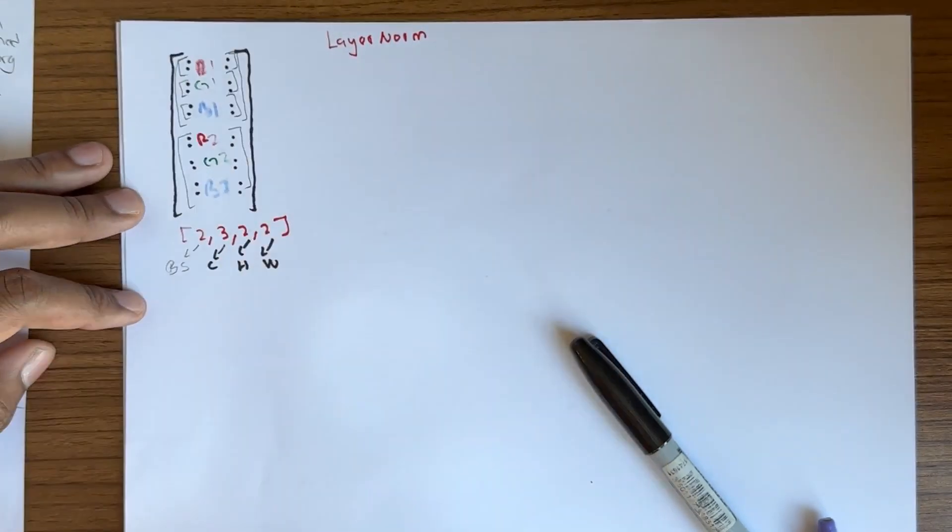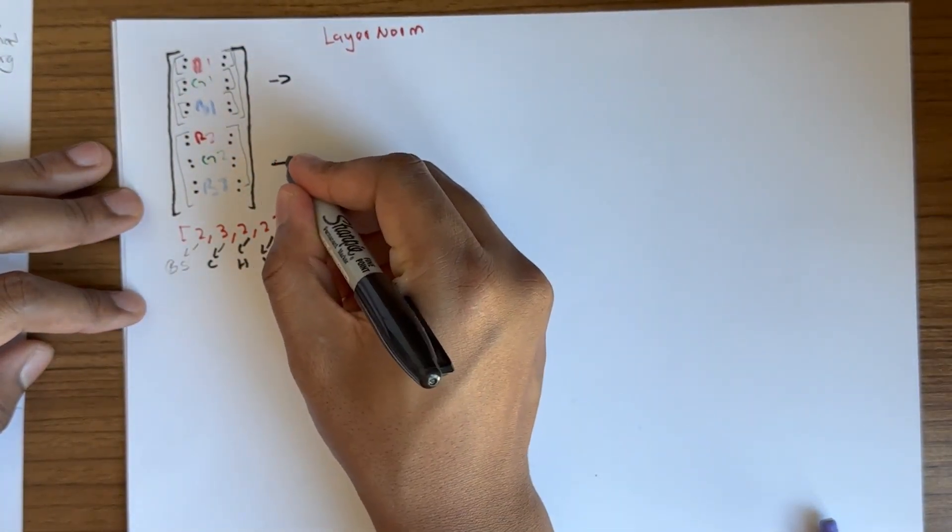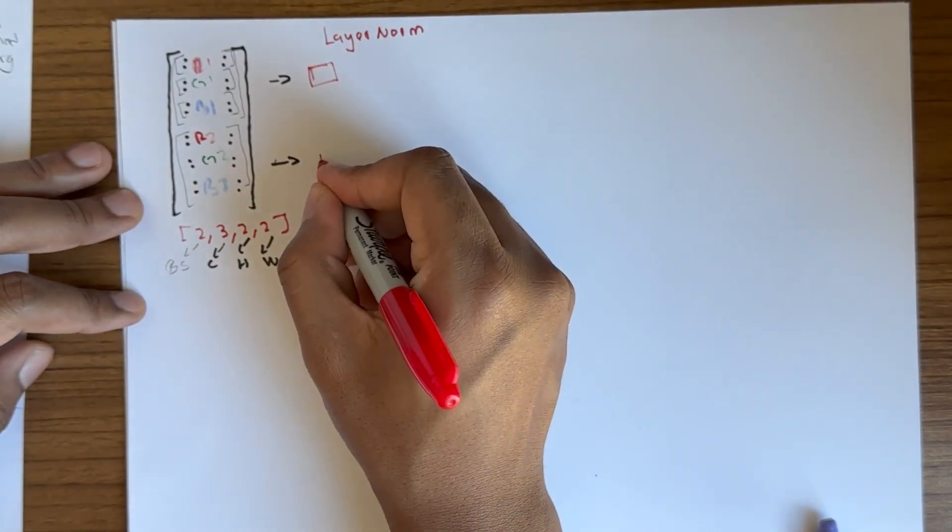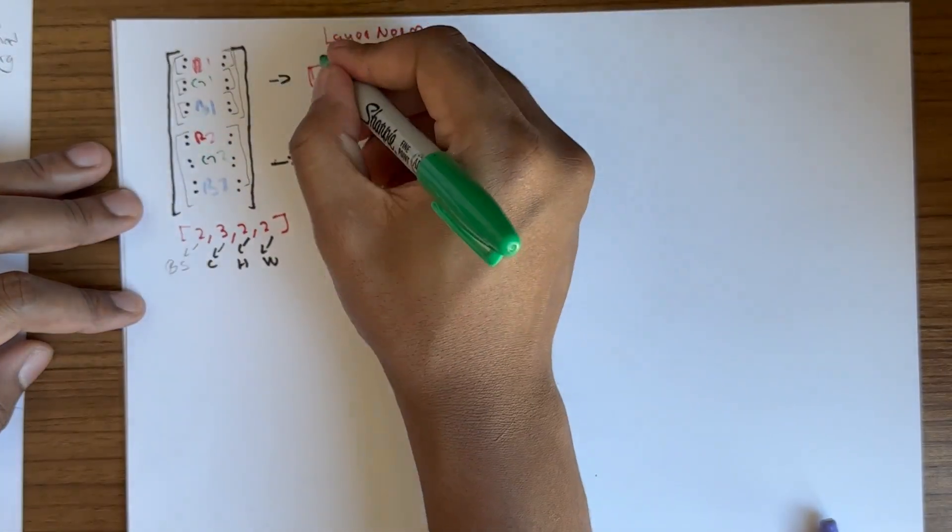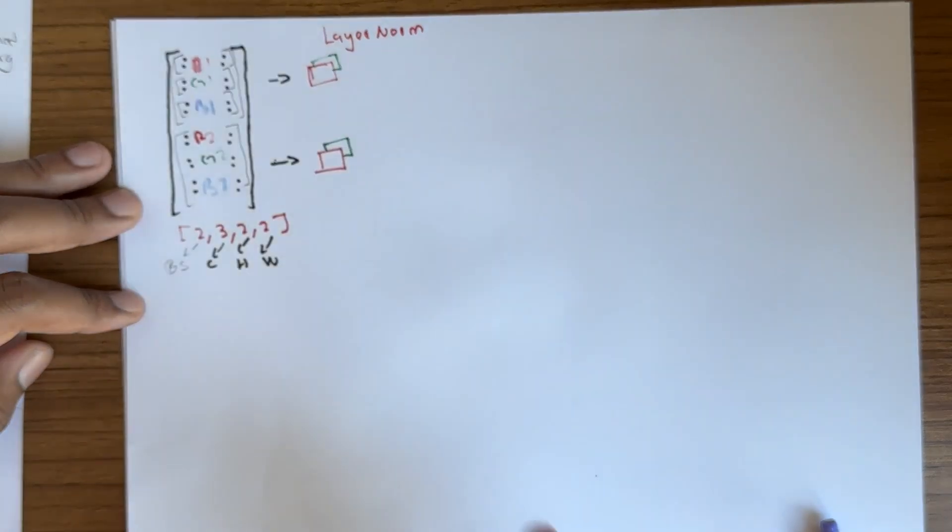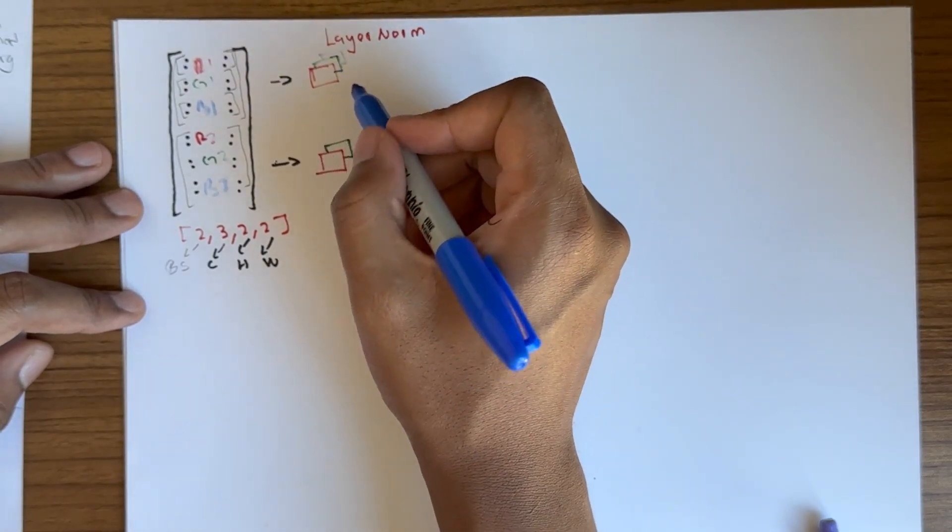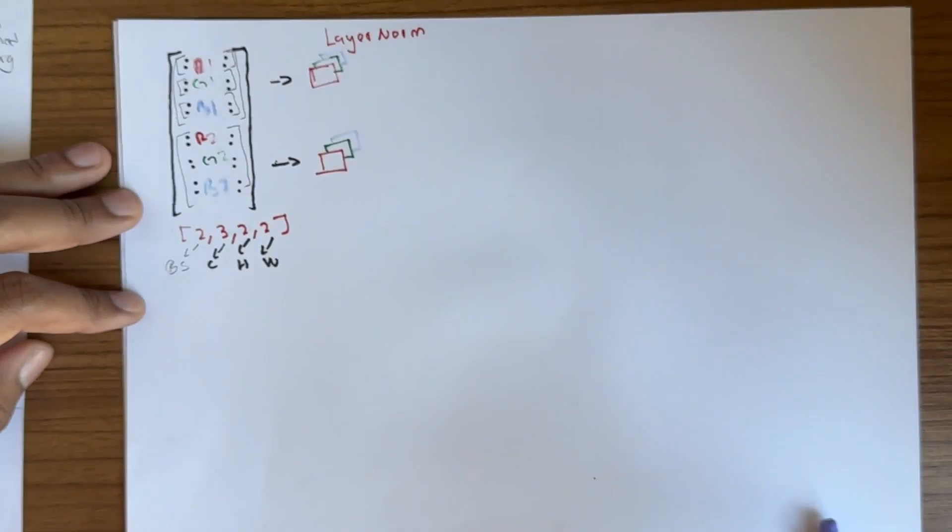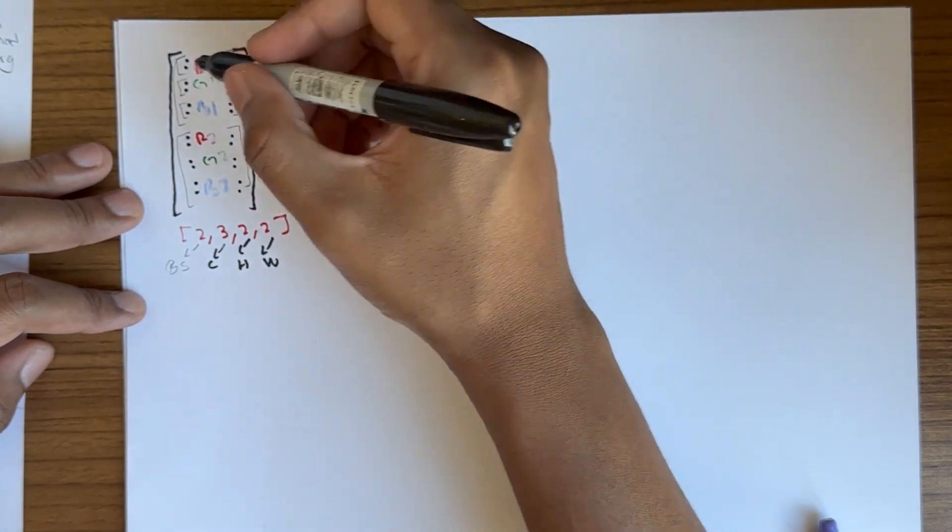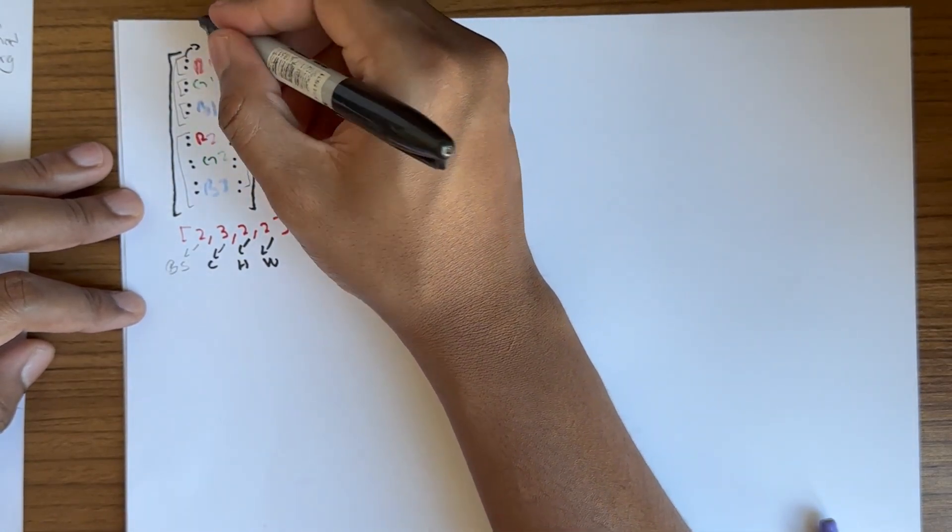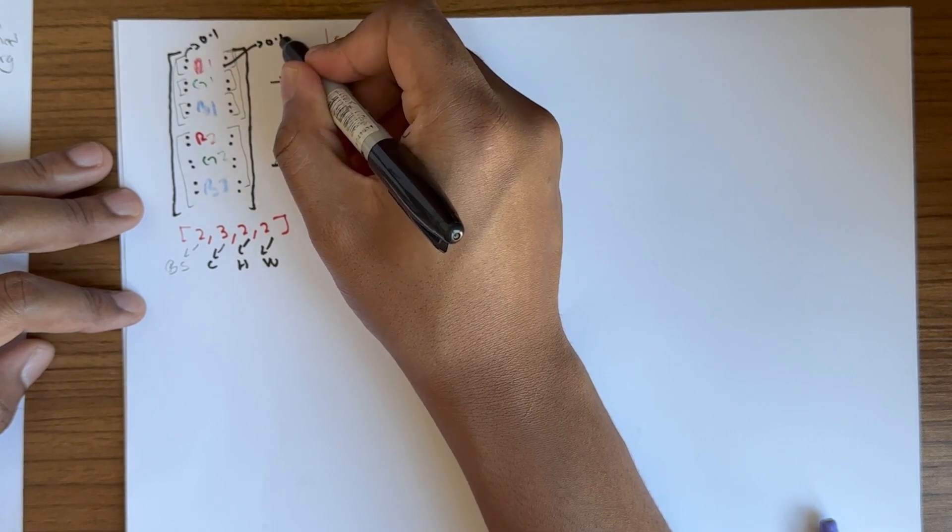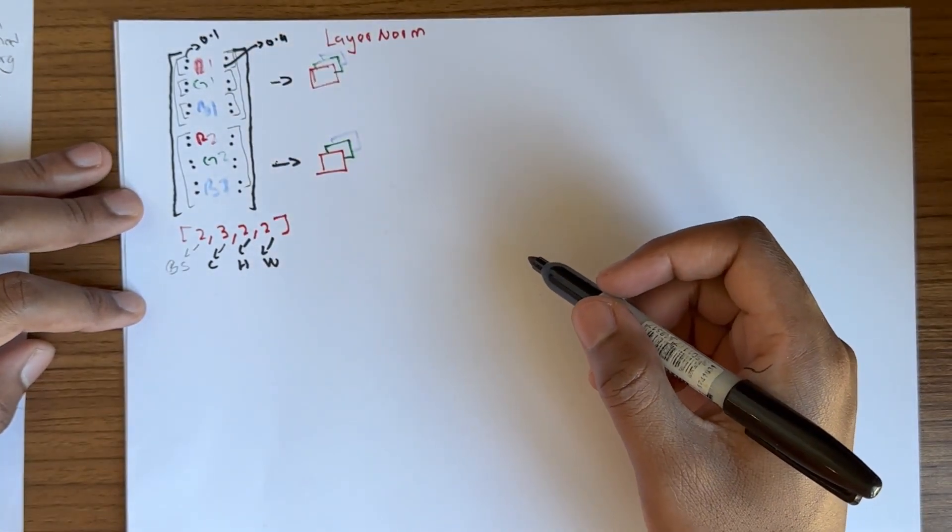I think it's important to visualize this. This particular image has the red channel R1 and R2, the green channel G1 and G2, and blue 1 and blue 2. Just to be clear, these are actually tensors with values. For example, this could be 0.1, this could be 0.4. Let's see how it works.